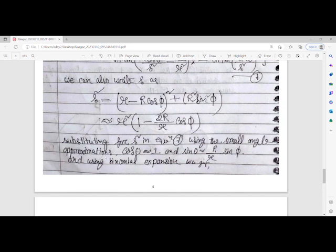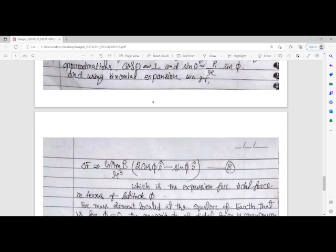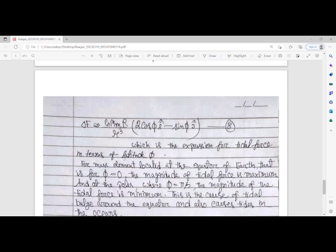Substituting the value of s² in equation seven and using the small angle approximation where cos θ ≈ 1 and sin θ ≈ R/r sin φ, and using binomial expansion, we get ΔF = GMmR/r³(2cos φ î - sin φ ĵ). This is equation number eight.